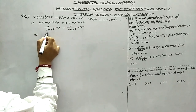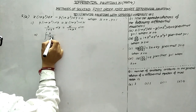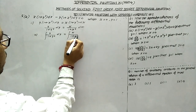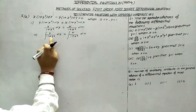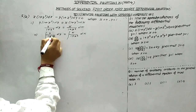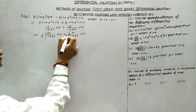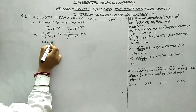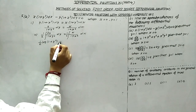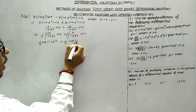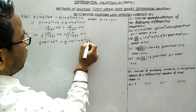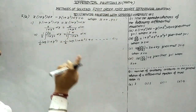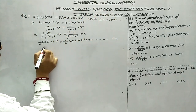Now on integrating both sides: integration of y/(1 + y²) dy equals integration of x/(1 + x²) dx. We use substitution — multiply and divide by 2 on both sides. This gives (1/2) log(1 + y²) equals (1/2) log(1 + x²) plus c. This is equation number 1. Now using x = 0, y = 1, we will find the value of c.